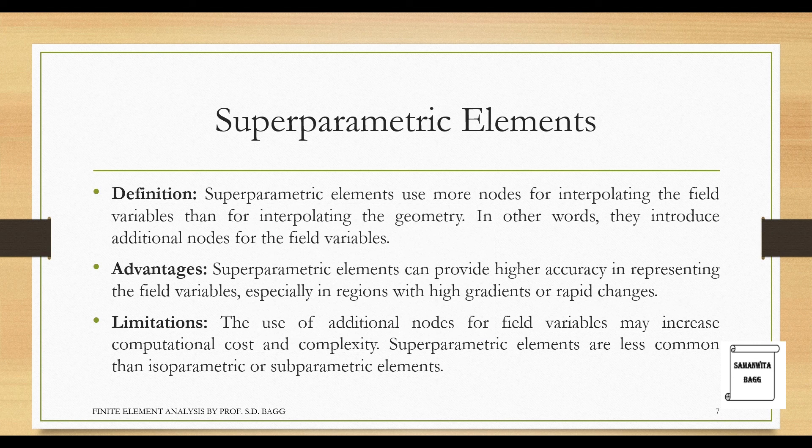Advantages: superparametric elements can provide higher accuracy in representing the field variables, especially in regions with high gradients or rapid changes. So this is an additional use, that if you do not want to find at a certain place, but then also you can find, so obviously it will be of use to you. Limitations: the use of additional nodes for field variables may increase computational cost and complexity. Superparametric elements are less common than isoparametric or subparametric elements. So even though we may use subparametric elements at times, superparametric is very rarely used in case of forming elements for a particular body.